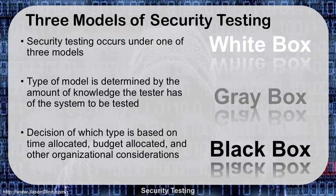The decision on what type is made is going to be based on a time allocation, a budget allocation, or other organizational considerations. Sometimes a white box is right, sometimes a black box is right, sometimes a gray box is right. It just depends on your need, so we'll talk about those three types now.